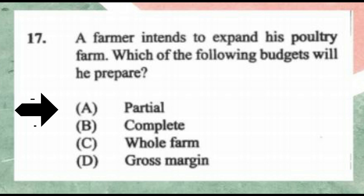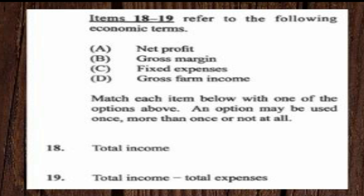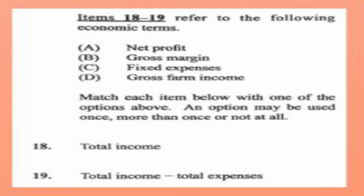Question number seventeen: a farmer intends to expand his poultry farm. Which budget will he prepare? A) partial, B) complete, C) whole farm, D) gross margin. The answer is A, partial budget. Questions eighteen and nineteen refer to economic terms: net profit, gross margin, fixed expenses, gross farm income. Number eighteen: total income — the answer is D, gross farm income.